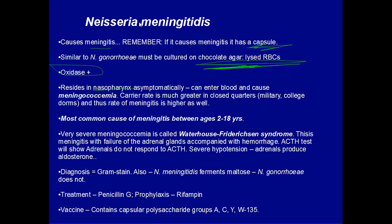You do not get pharyngitis from Neisseria meningitidis. But eventually it can enter the blood, and since it has a capsule it's protected from the immune system and can reach the blood-brain barrier, cross it, and cause meningococcemia. The carrier rate in closed quarters — military barracks or college dorms — is around 30%. This is the most common cause of meningitis between ages 2 and 18, because people are in schools and closed quarters where transfer happens more easily.